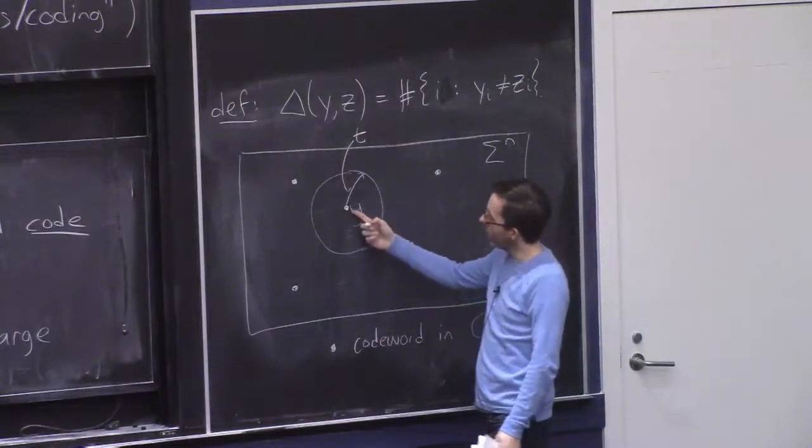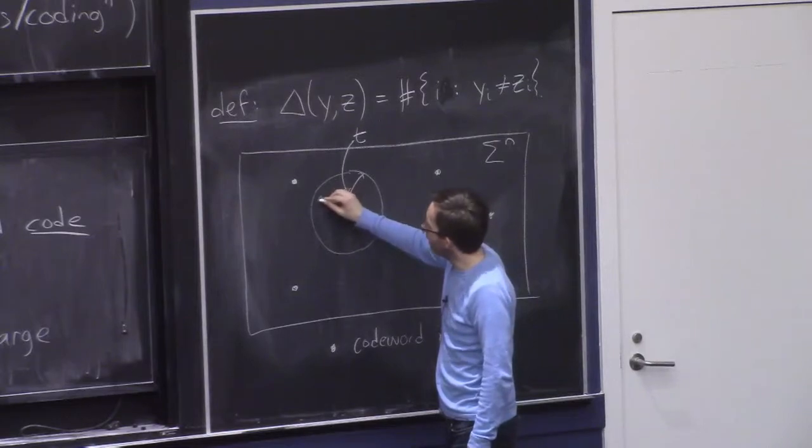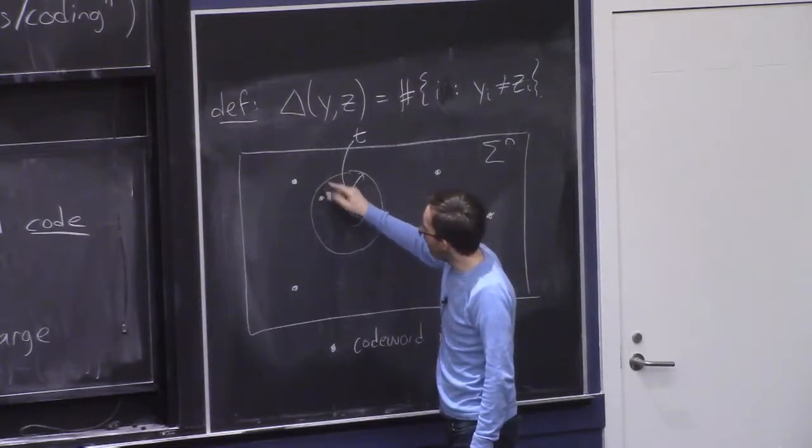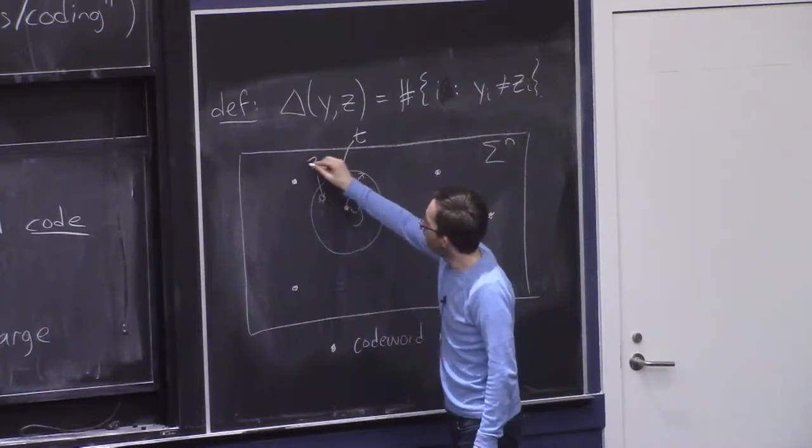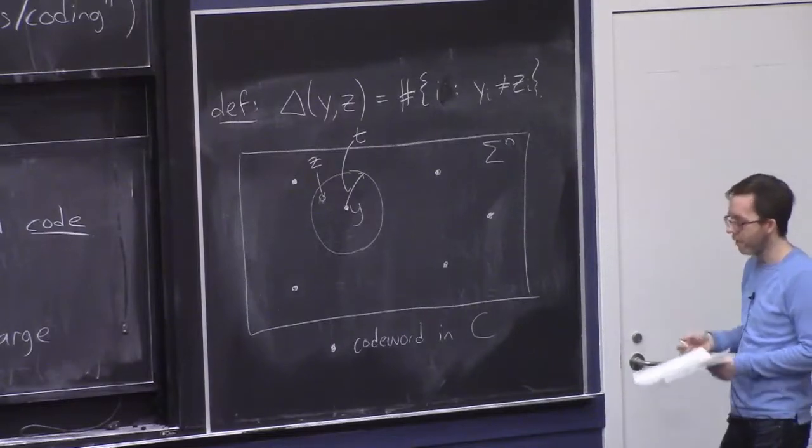And we might imagine if this was Y, the transmitted word, then the received word might be any string Z inside this hamming ball. This is, according to our assumptions, the thing that the receiver might receive.